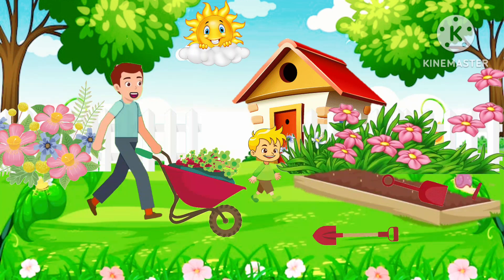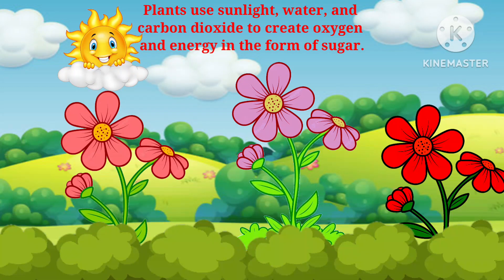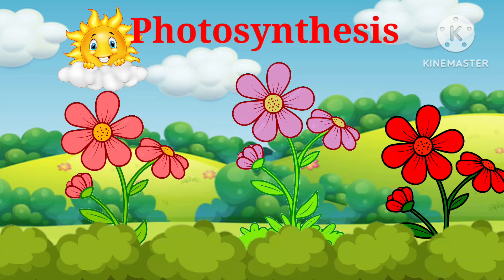Hey dad, why are you putting soil here? Because plants require soil to prepare their food. Let's see how plants use sunlight, water, and carbon dioxide to create oxygen and energy in the form of sugar. This process is called photosynthesis.